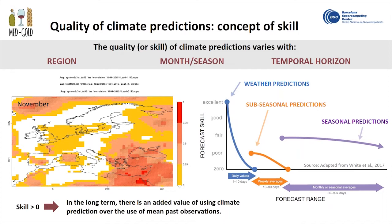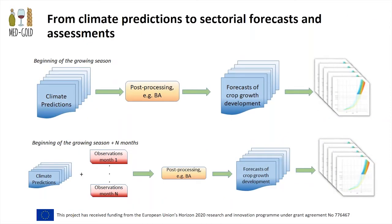I will stop my presentation here, and my colleague Andrea will explain how climate prediction can be used to fit impact models. Thank you, Nube. We have seen what can be obtained in terms of seasonal predictions and climate predictions overall, but we need to translate this information into something that can be used in different socioeconomic sectors, such as agriculture. I will show you an example of how we can translate and use this information in the agricultural sector by coupling this source of data with crop growth models.